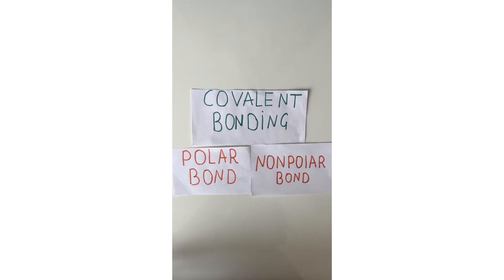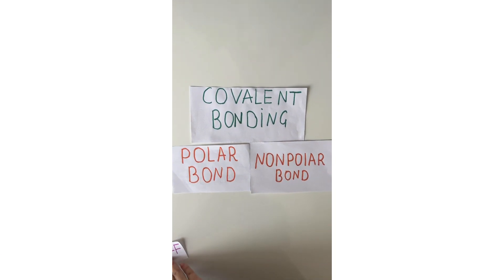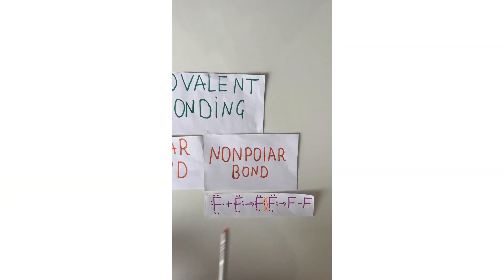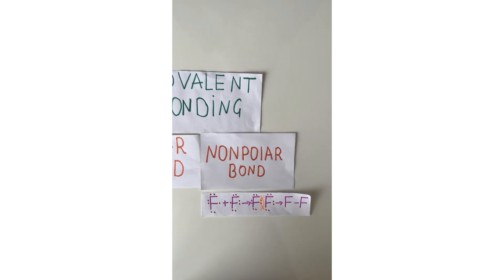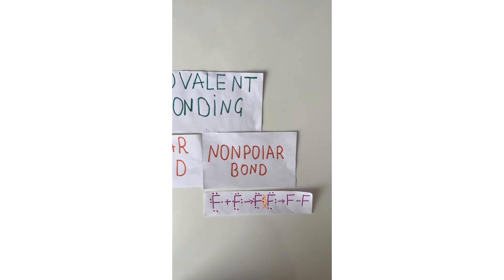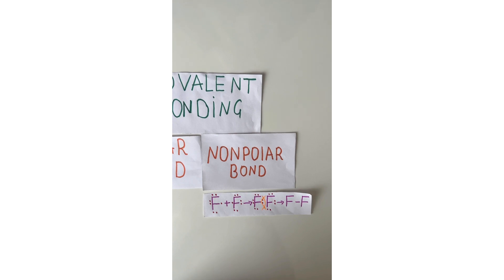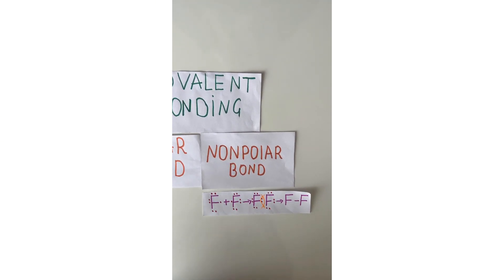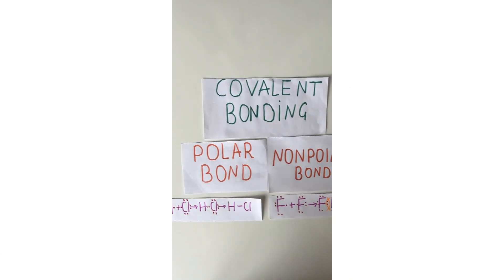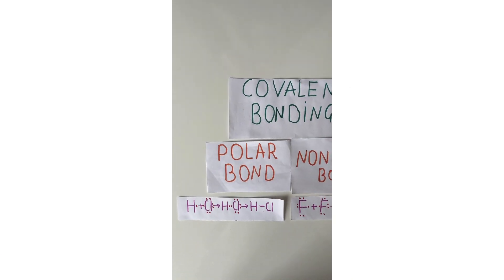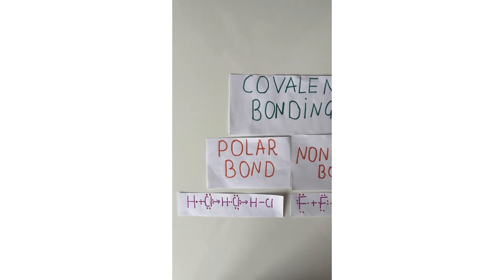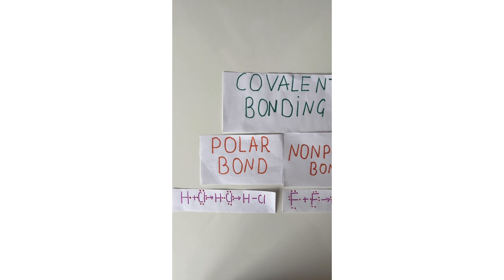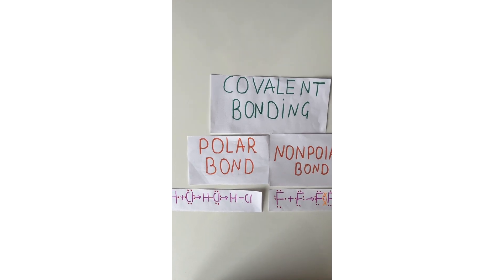Let's look at the electrons of polar and non-polar constructions. For a non-polar bond, as a result of the attraction of the unpaired electrons of two fluorine atoms, a non-polar covalent bond is formed. For a polar bond, as a result of the attraction of the unpaired electrons of a hydrogen atom and a fluorine atom, a covalent polar bond is formed.